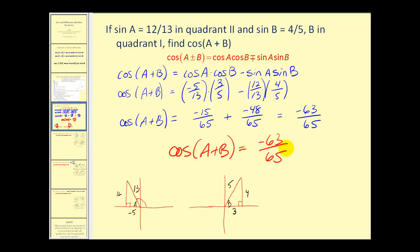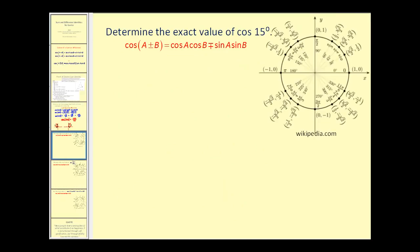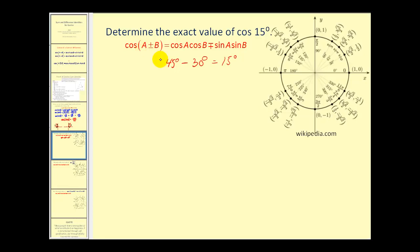Let's take a look at a couple more problems. Here we want to determine the exact value of cosine fifteen degrees. Fifteen degrees is not one of the standard reference angles, but we can use a sum or difference of two reference angles to obtain fifteen degrees. For example, using forty-five degrees minus thirty degrees gives fifteen degrees. So we use angle a equal to forty-five degrees and angle b equal to thirty degrees.